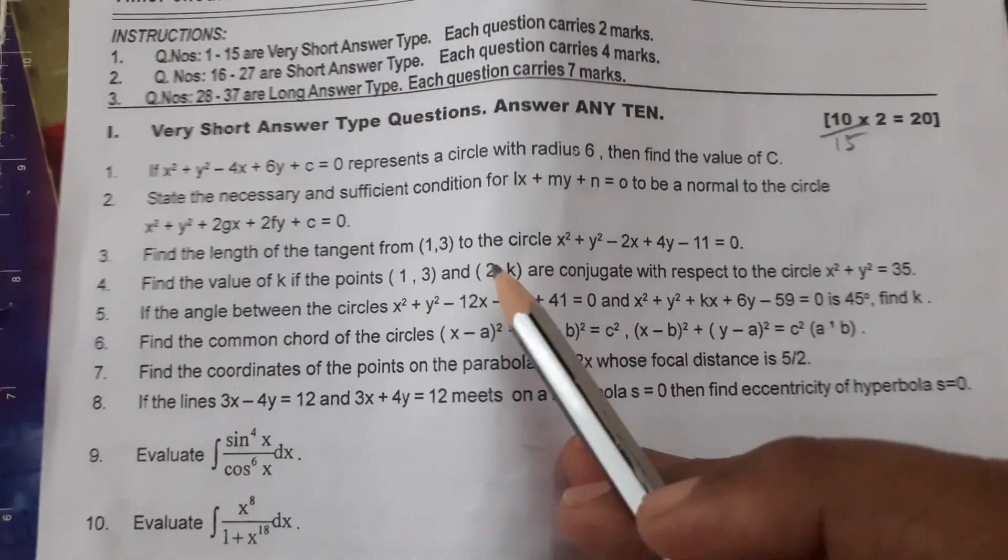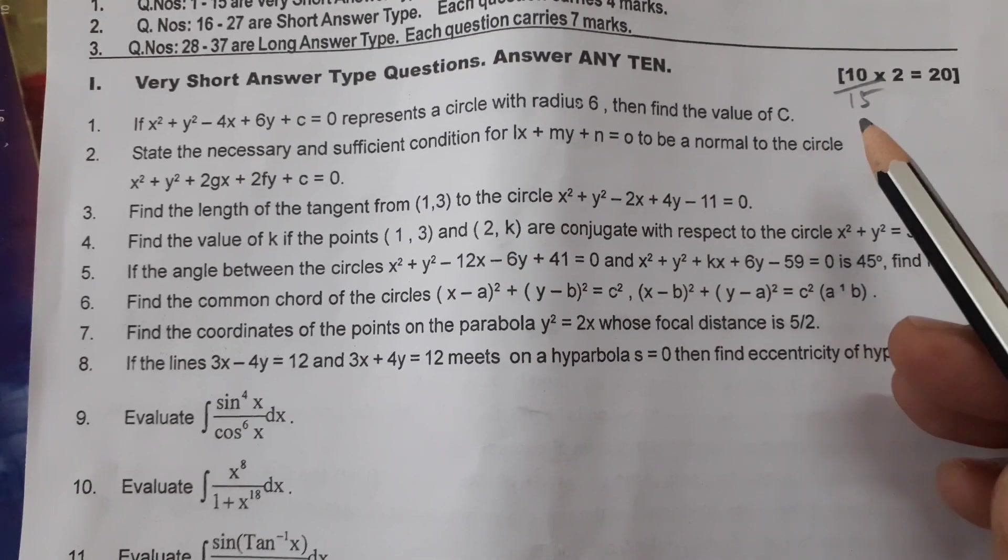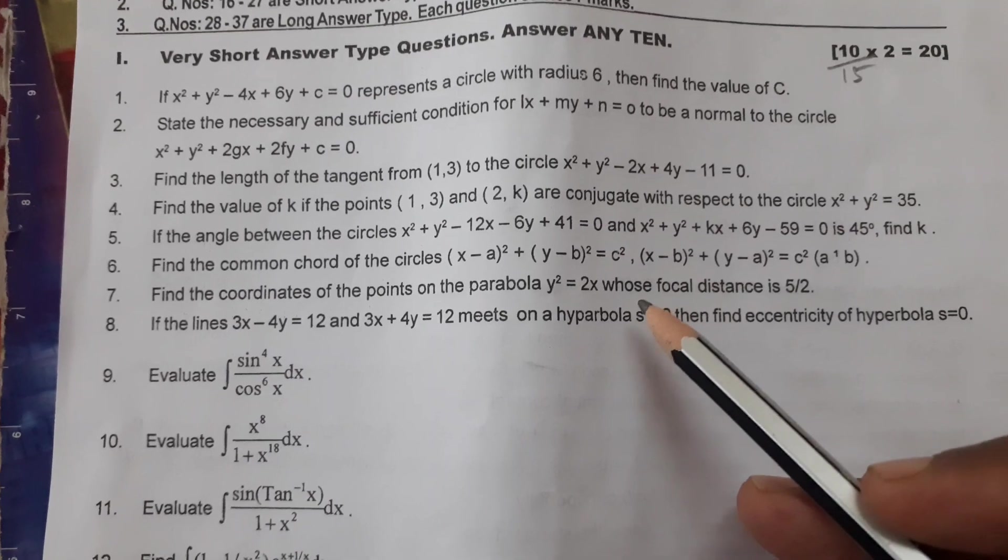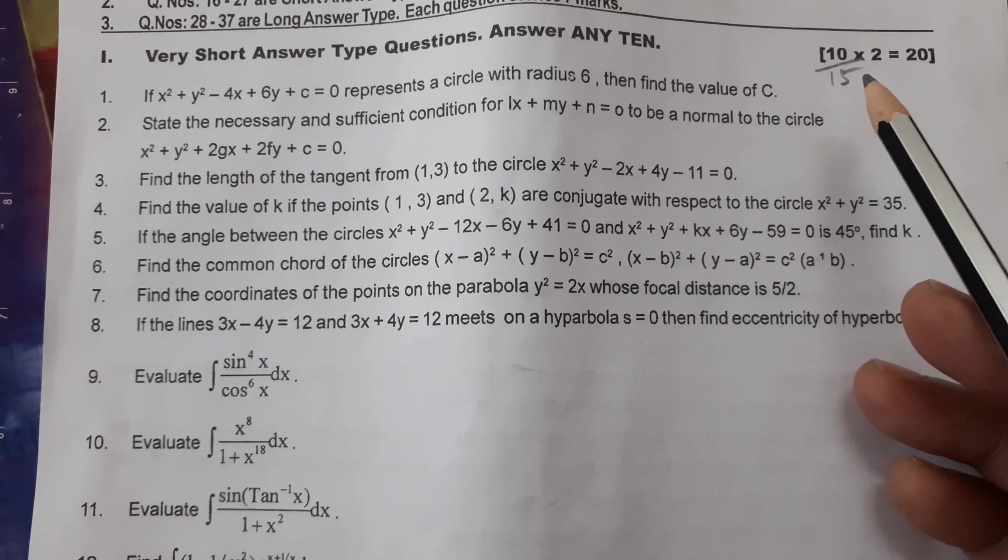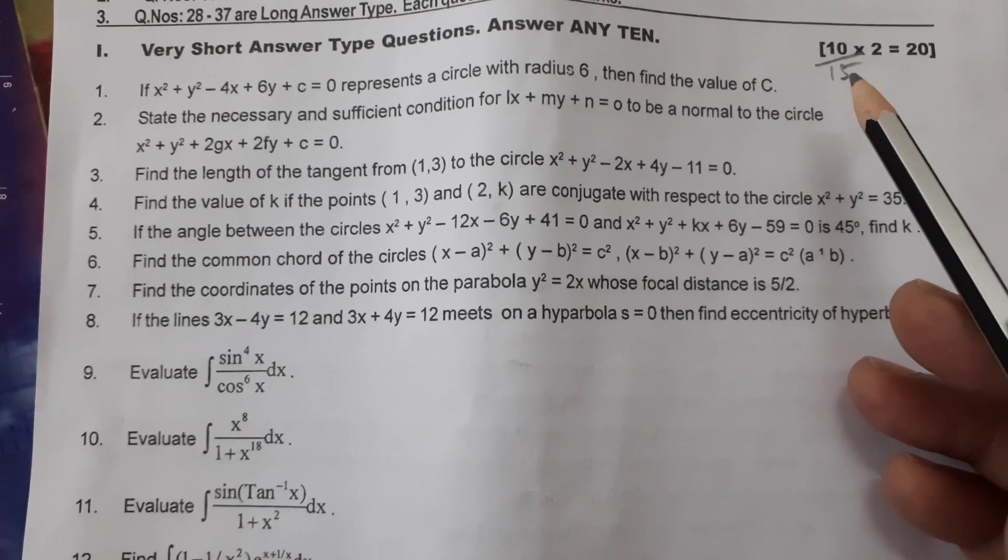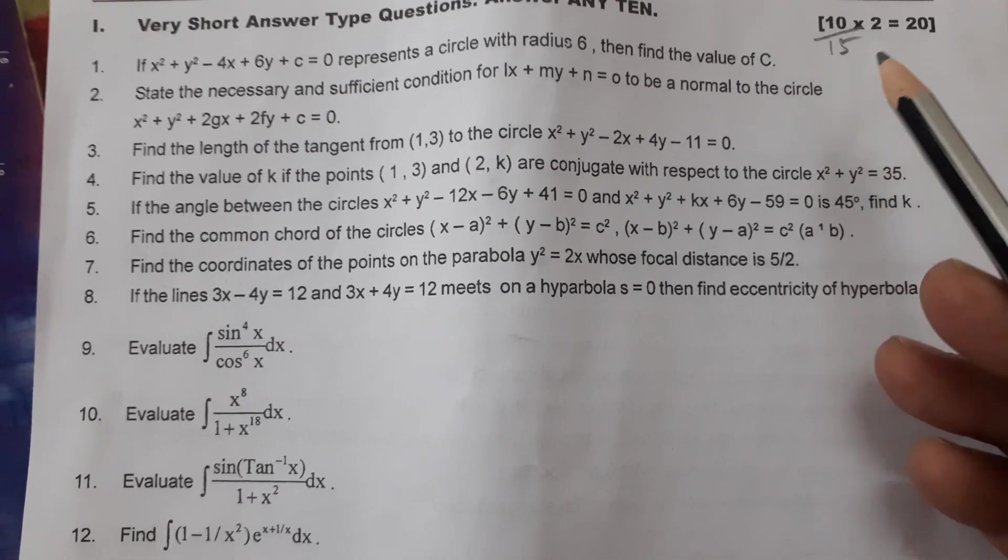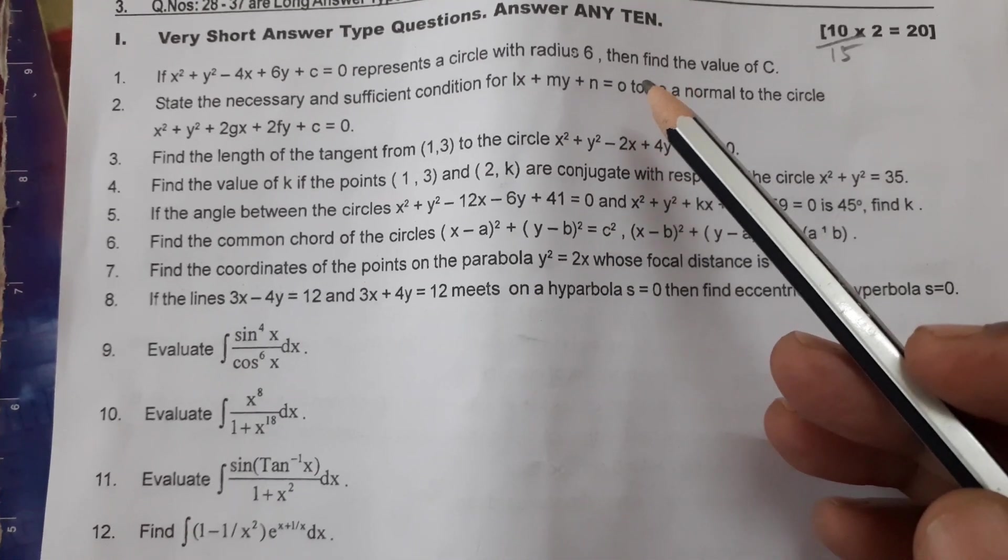First, we have VSAQs. How many VSAQs are given? 15 VSAQs are there. Out of 15, 10 only we have to answer. Each one carries 2 marks. Very short answer type questions. 10 into 2, 20 marks. So, these are the VSAQs.